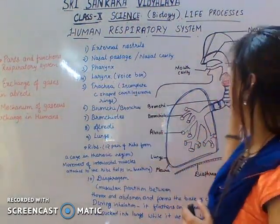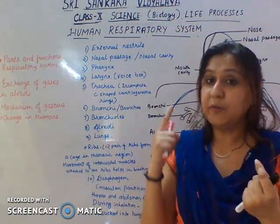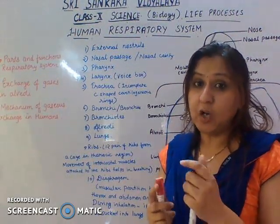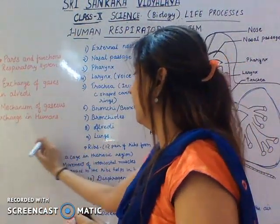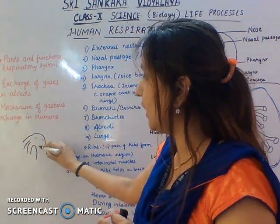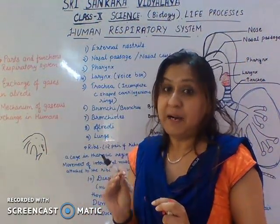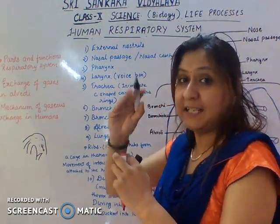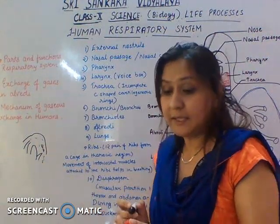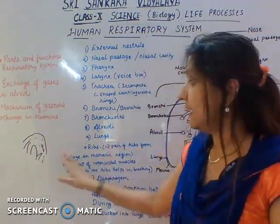After the pharynx, air reaches the larynx. Above the larynx, a glottis is present, and the glottis has a flap-like structure called the epiglottis. The pharynx is the common passage for both air and food. The epiglottis always remains open, but when we are swallowing food, the flap closes to prevent food from entering the respiratory tract.